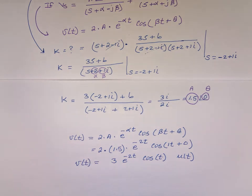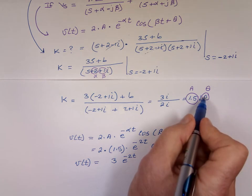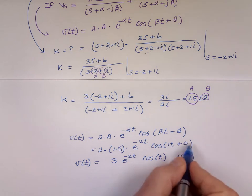Is theta always going to be 0? Absolutely not. I just made this problem without thinking, and I lucked out with theta being 0. Sometimes that angle is 50 degrees, 90 degrees, 40 degrees. If that's the case, you go plus 50, plus 60, whatever the angle is.